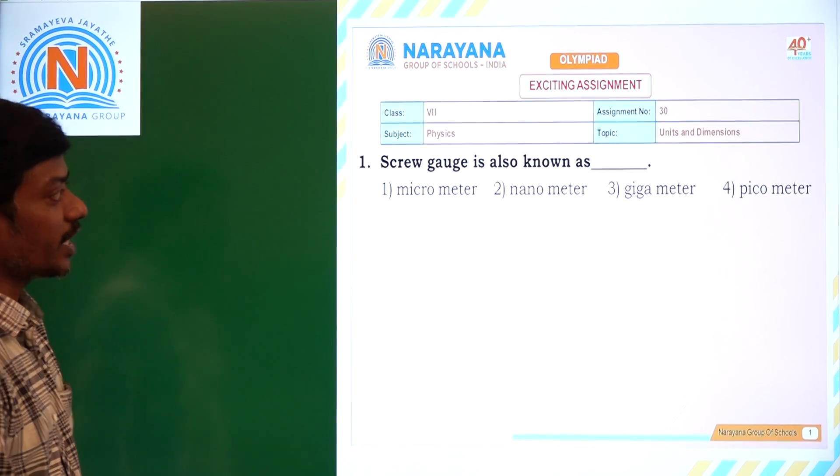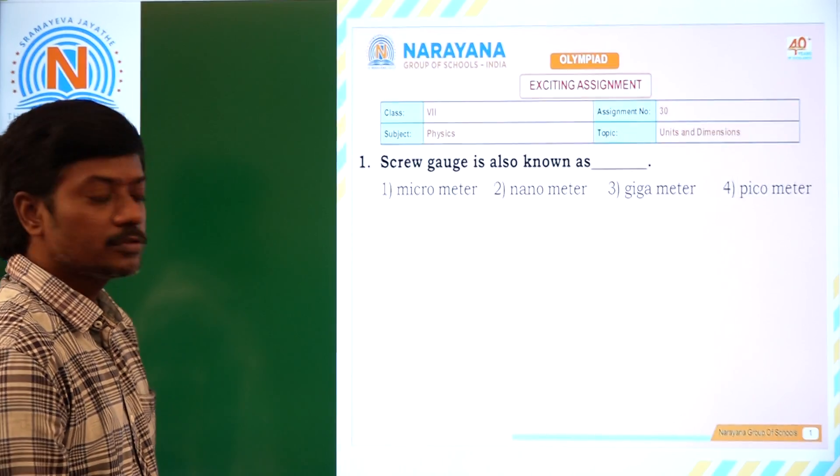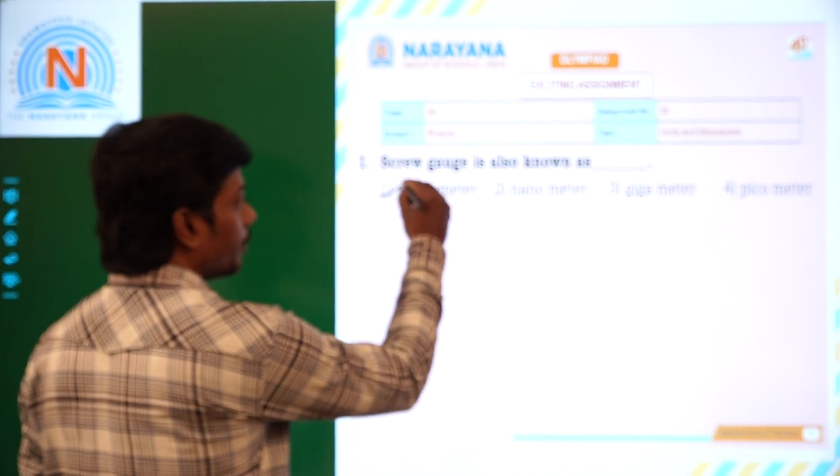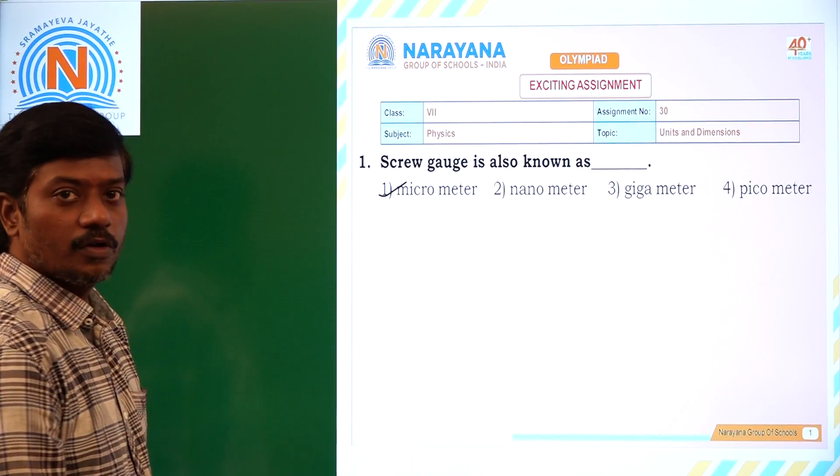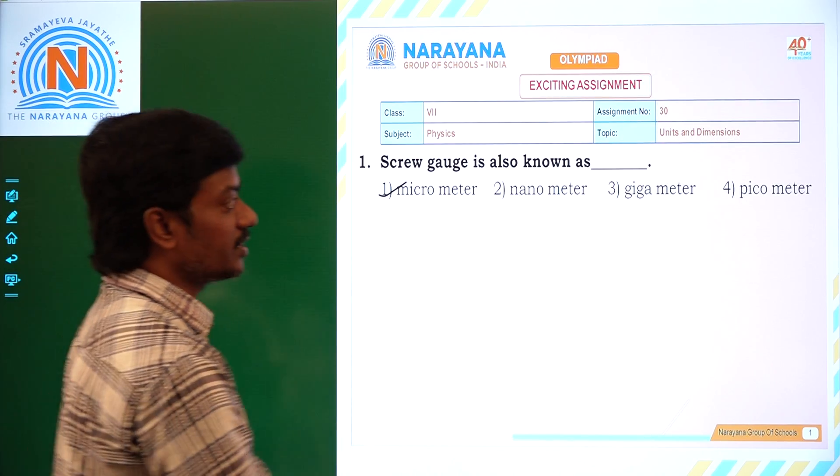First question is, screw gauge is also known as - screw gauge is also known as micrometer. So the first answer is correct. Let's see the second question.